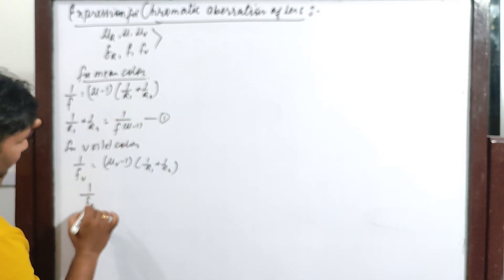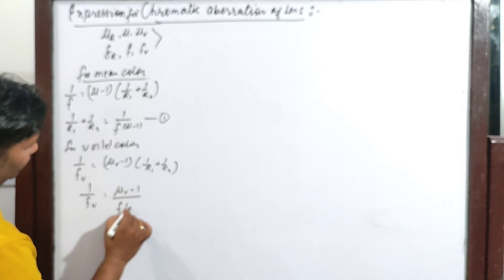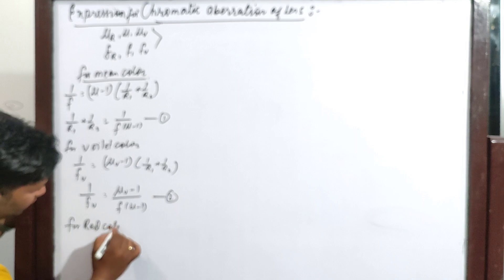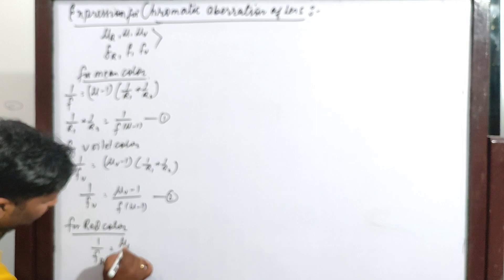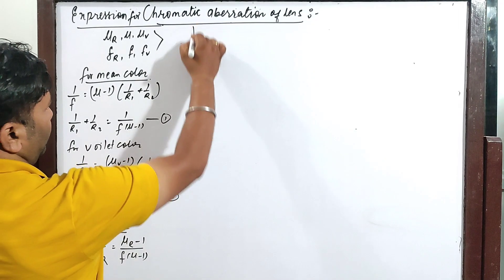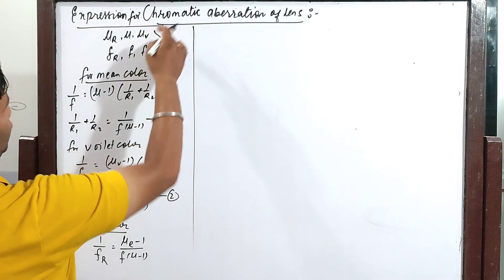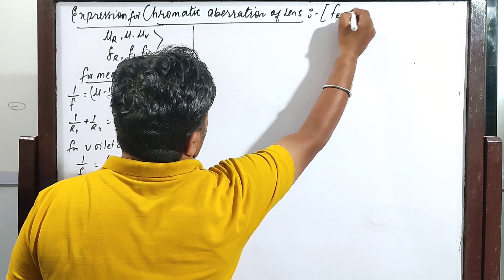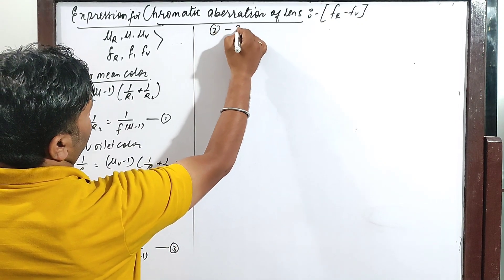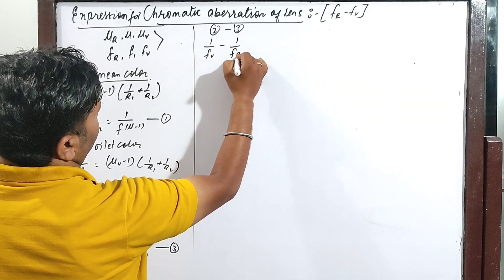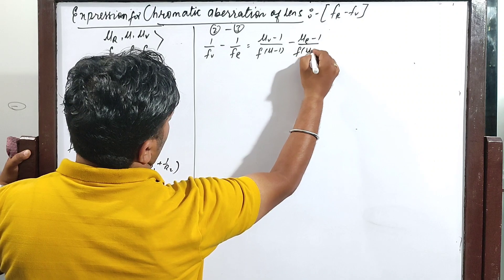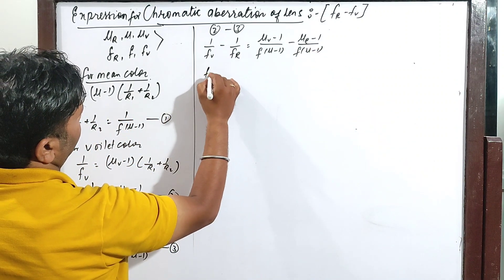For violet color: one by f_v is equal to (mu_v minus 1) times (one by R1 plus one by R2). Putting the value of (one by R1 plus one by R2) from the mean color equation, we get: one by f_v equals (mu_v minus 1) divided by (f times (mu minus 1)). Similarly for red color: one by f_r equals (mu_r minus 1) divided by (f times (mu minus 1)). Subtracting equation 3 from equation 2 gives: one by f_v minus one by f_r equals (mu_v minus mu_r) divided by (f times (mu minus 1)).